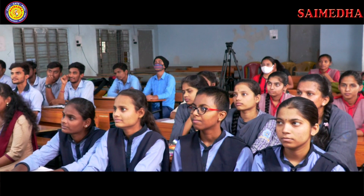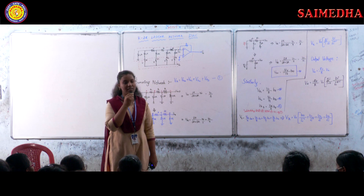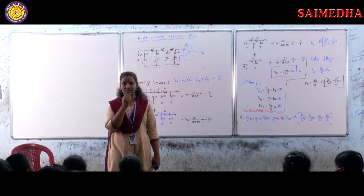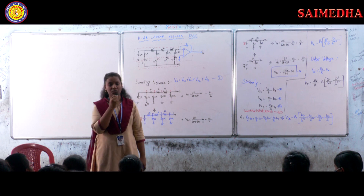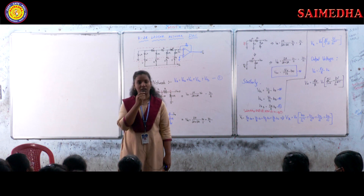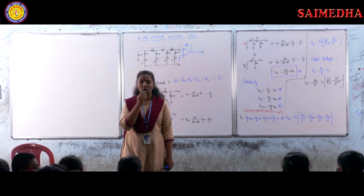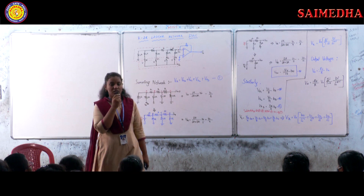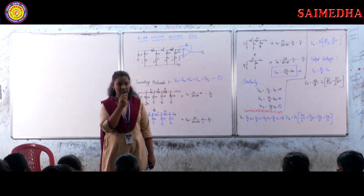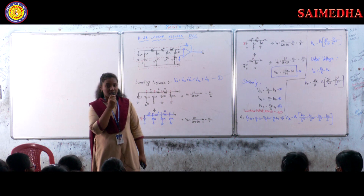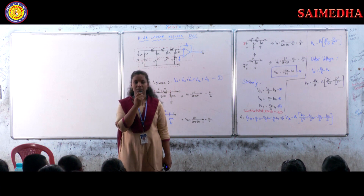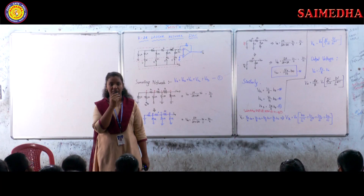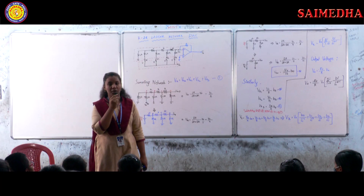There are two types in DAC. The first method is the binary weighted resistors method, and it has some disadvantages. By increasing the number of bits, the least significant bit in that network will have a high resistance value, making it very difficult to fabricate into an IC. Another disadvantage is that we use different ranges of resistors, which affects the accuracy of the output voltage. To overcome these problems, we use the R2R Ladder Network.